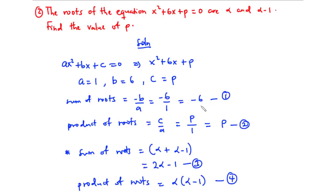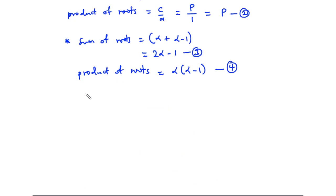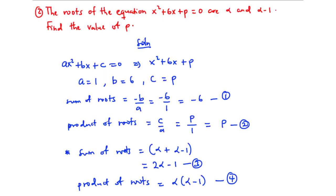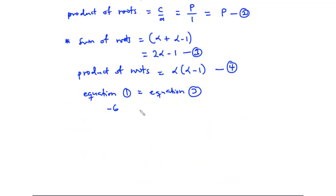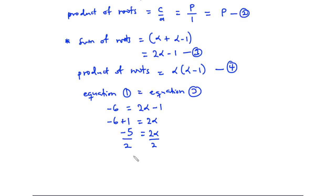We have sum of roots equal to negative 6 (equation one) and sum of roots equal to 2 alpha minus 1 (equation three). Setting equation one equal to equation three: negative 6 equals 2 alpha minus 1. Transposing, negative 6 plus 1 equals 2 alpha, so negative 5 equals 2 alpha. Dividing by 2, alpha equals negative 5 over 2.